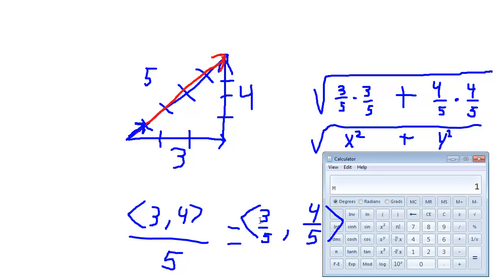The length of a vector after I divide its individual components by its length is length one, which is what we want. A normalized vector, a vector of length one.